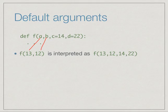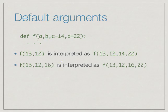On the other hand, you might provide three arguments, in which case a becomes 13, b becomes 12 as before, and c becomes 16, but d is left unspecified so you pick up the default value. So this is interpreted as f of 13, 12, 16, and the default value 22.